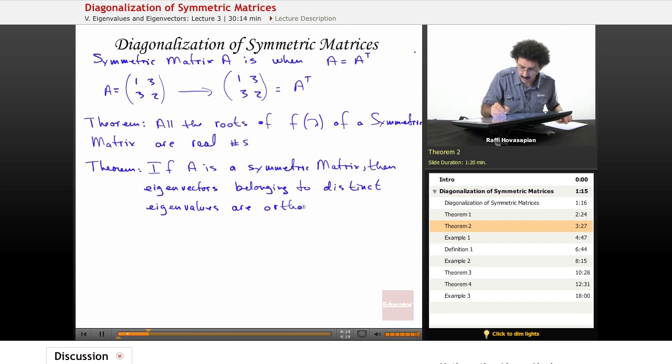And orthogonal, as you remember, is dot product equals zero or perpendicular. So once again, if A is a symmetric matrix, then the eigenvectors belonging to distinct eigenvalues are orthogonal. So let's say I have a particular matrix, a two by two, and let's say the eigenvalues that I get are three and negative four. Well, when I calculate the eigenvectors for three and for negative four, as it turns out, those vectors that I get will be orthogonal. Their dot product will always equal zero.